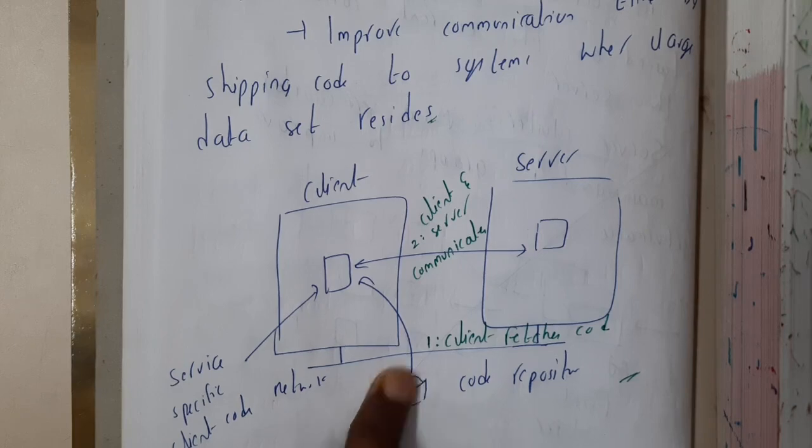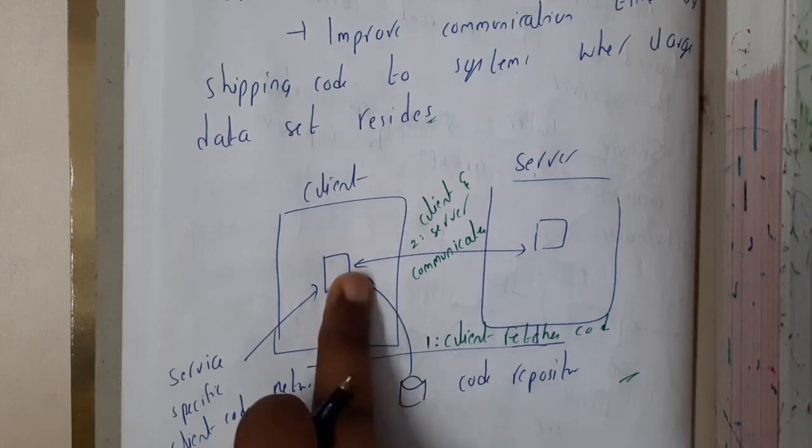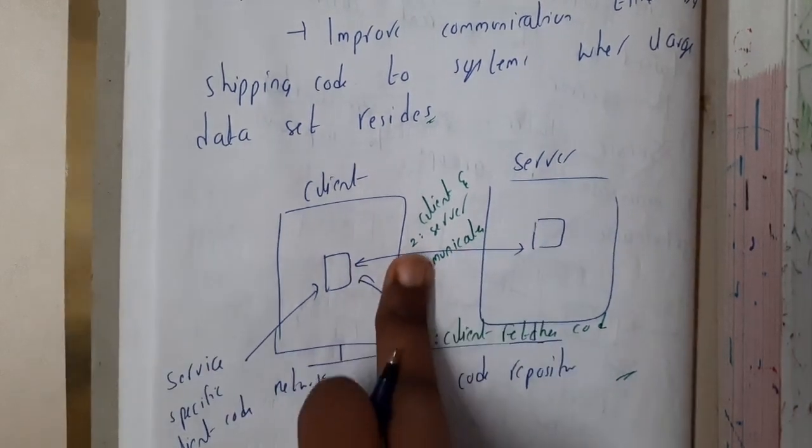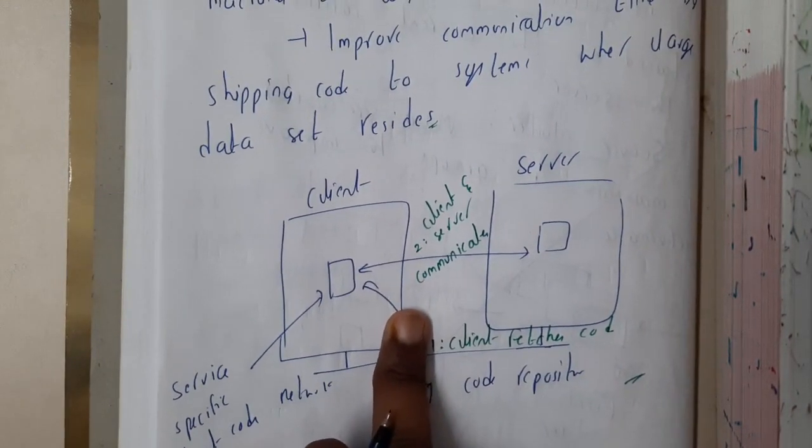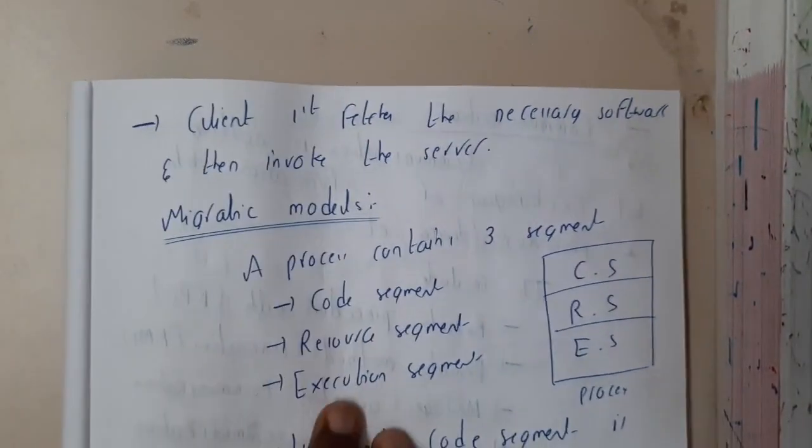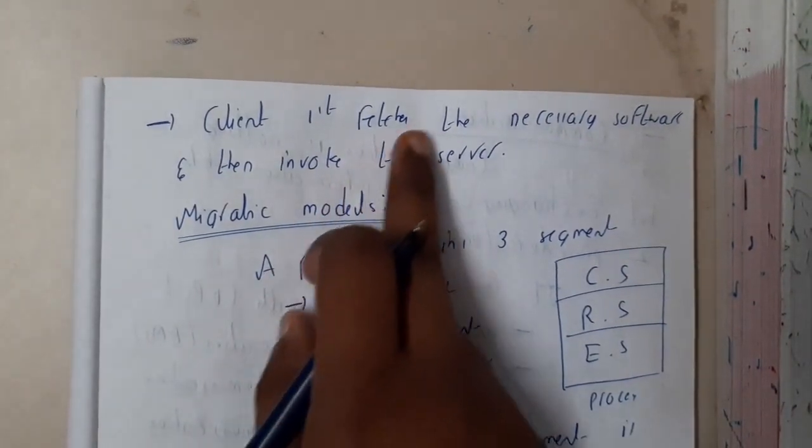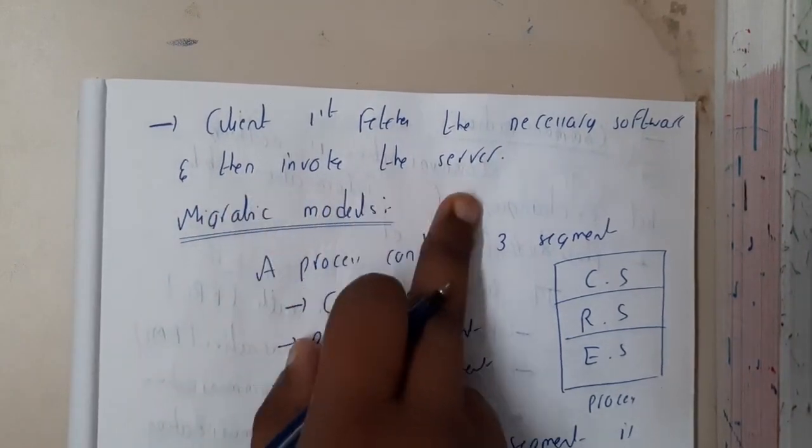This is the code repository where the code is. We are fetching it and passing it to the server or exchanging between the server and client. I hope everyone got some basic idea about this code migration. The client first fetches the necessary software and invokes the server, the same explanation for the diagram.